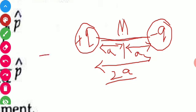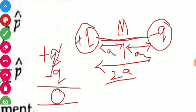By adding the charges: one is +q and one is -q. When we add these they cancel each other and we get zero. So from here we can say that the net charge on this dipole is 0.